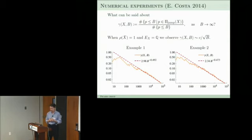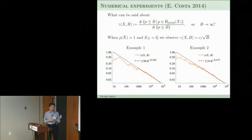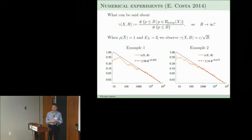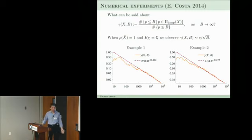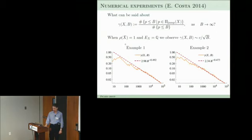My student Edgar Costa, who is graduating this year, implemented a version of Kedlaya's algorithm for counting points over finite fields. Kedlaya's original paper dealt with hyperelliptic curves of small genus, but Edgar overcame the difficulties of implementing this for surfaces. He extended the search from primes less than 10 to primes less than 100,000, which allows you to get statistics on jumping behavior. What we see is that when Picard rank is 1, the proportion of jumping primes is essentially C over square root of B, where B is the bound.